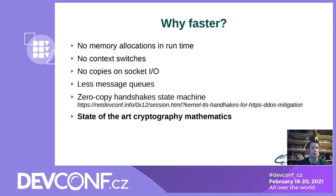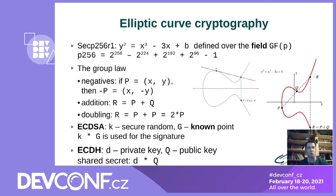Why is Tempesta TLS faster? Firstly, because we have no context switches, no memory allocation, and we have optimized network I/O. You can find more about Tempesta TLS architecture in one of our NetDev papers. We also use some cutting-edge research from elliptic curve cryptography.